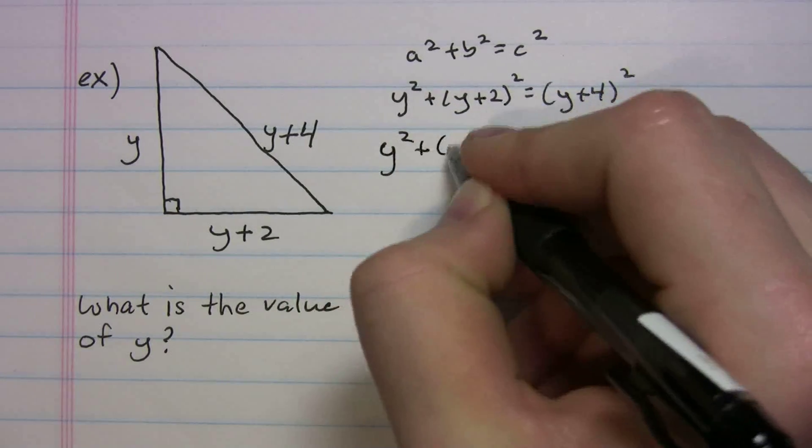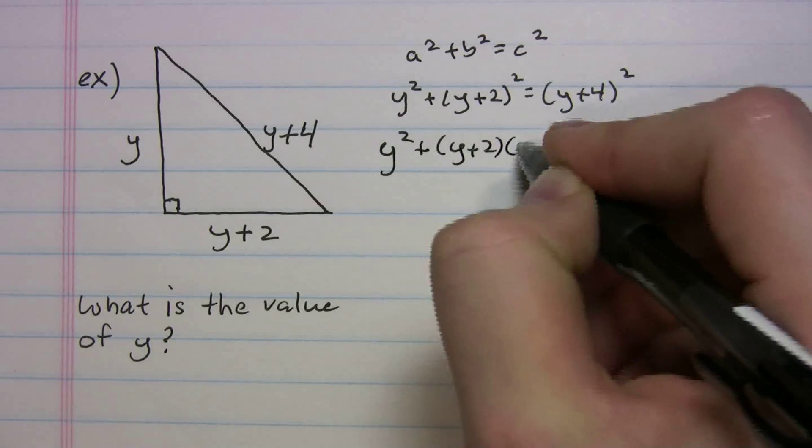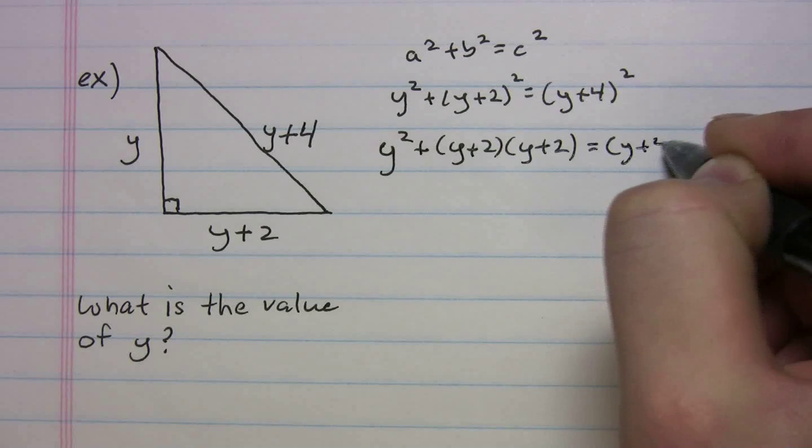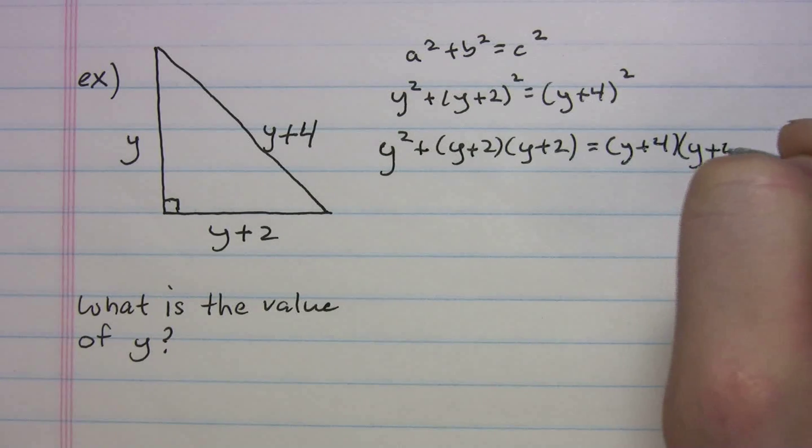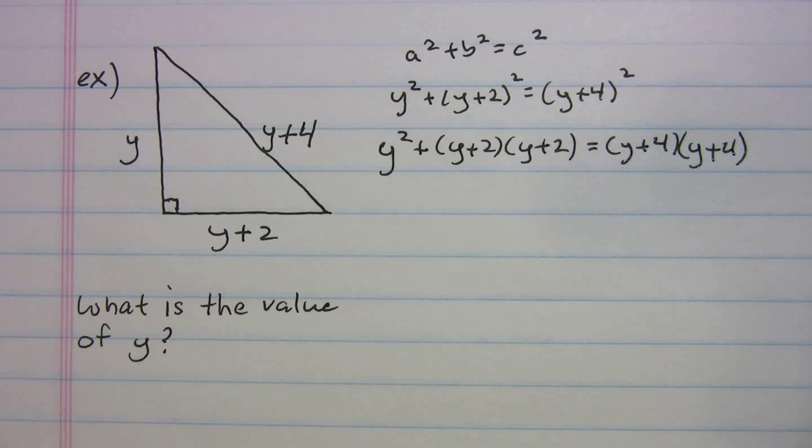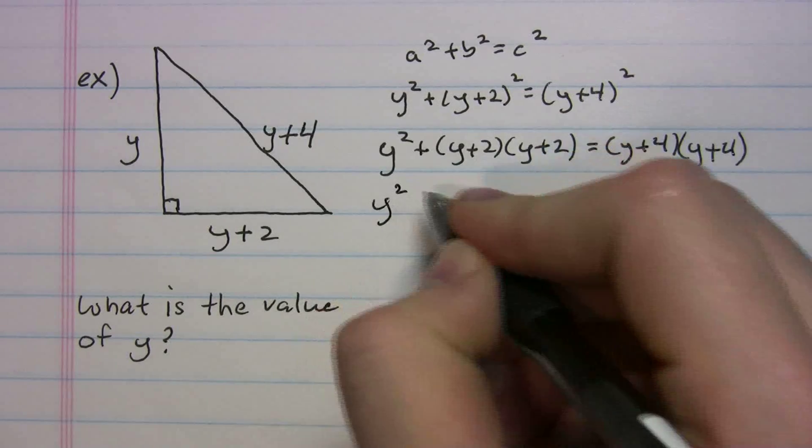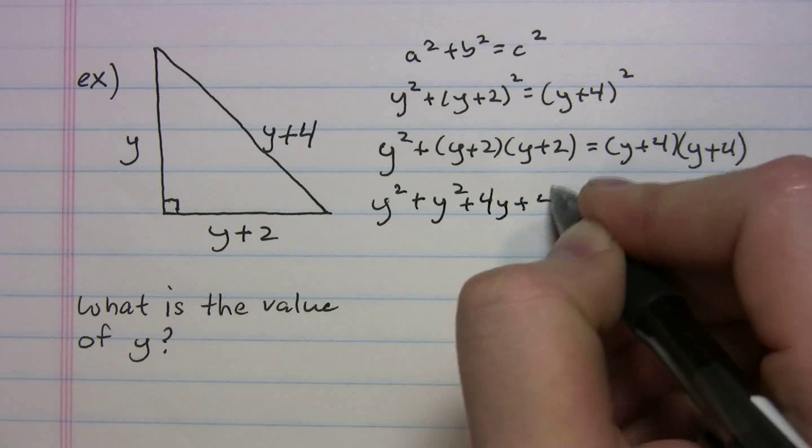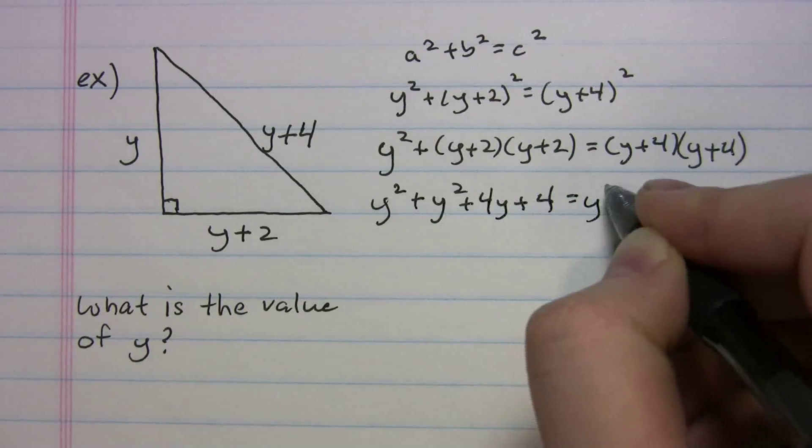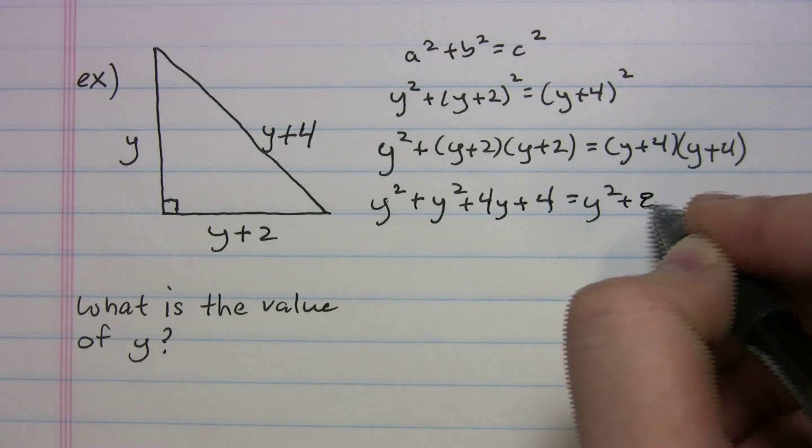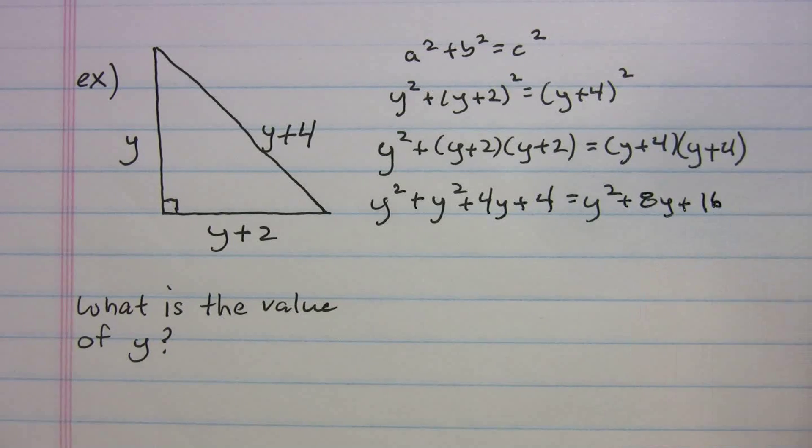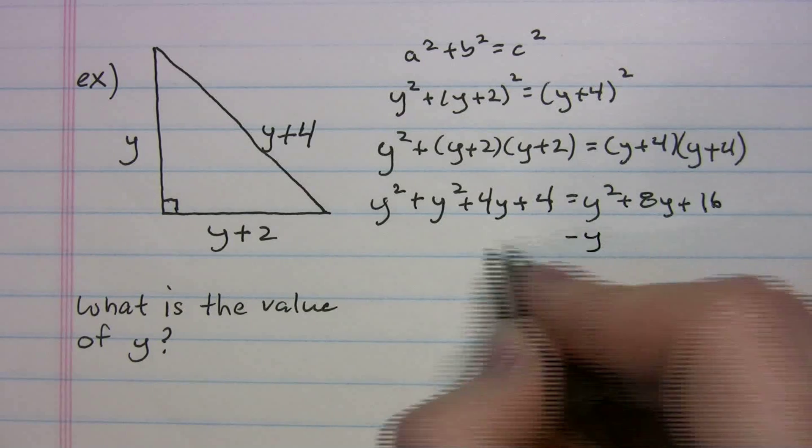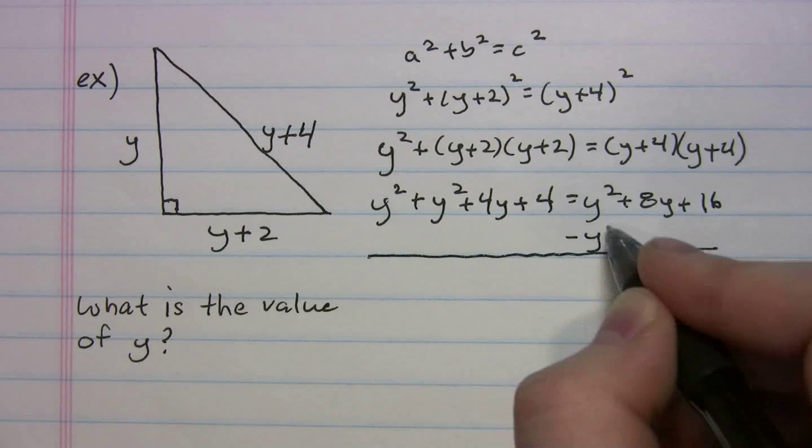So I'll write it again. a squared plus b squared equals c squared. And that's going to look like y squared plus y plus 2 squared equals y plus 4 squared. So unfortunately, we got to do some foiling now. So y squared plus y plus 2 times y plus 2 equals y plus 4 times y plus 4. Okay. We're going to get y squared plus 4y plus 4 equals y squared plus 8y plus 16.